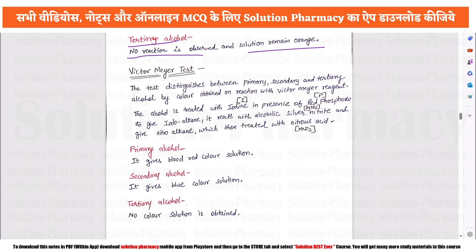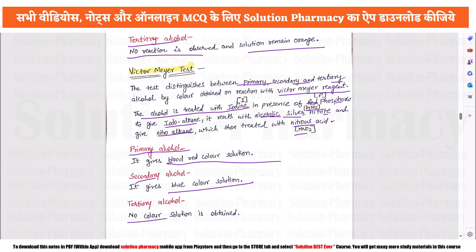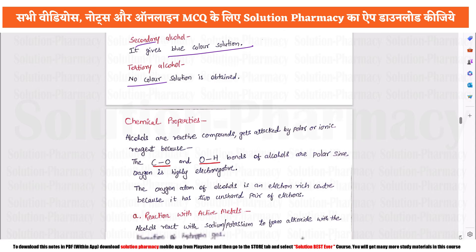The third reaction is the Victor Meyer test, developed by scientist Victor Meyer. In this test, the alcohol is treated with iodine in the presence of red phosphorus to give an iodoalkane. This is then reacted with alcoholic silver nitrate to give a nitroalkane, which is further reacted with nitrous acid. For primary alcohol, a blood red color appears; for secondary, a blue color; and for tertiary, no color change.